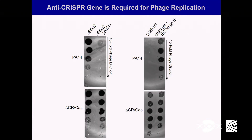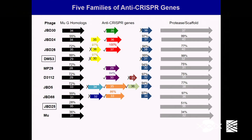We showed these genes could really allow the phage to grow — the phage winning this evolutionary battle against the CRISPR system. When we disrupted the anti-CRISPR gene with a frameshift, the phage could no longer grow. And when we added an anti-CRISPR gene to a phage that lacked one, the phage could now grow. We found that although these phages were very similar to each other, they had different genes in this region — five distinct families of anti-CRISPR genes that could all inhibit the Type 1F system of Pseudomonas aeruginosa.